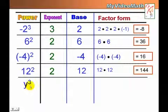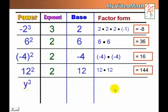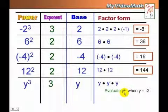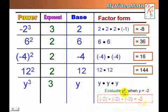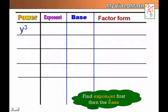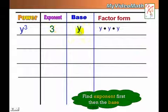For y cubed: identify the exponent, the base, and the factor form. If y equals negative 2, we want to evaluate y to the third power. The exponent is 3, the base is y, and the factor form is y times y times y. Substituting negative 2 gives negative 2 times negative 2 times negative 2.